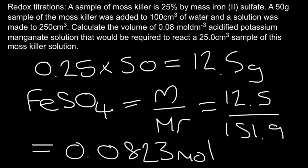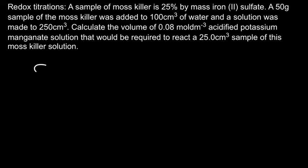So that's all the moles of FeSO₄ that are inside the moss killer sample that I'm using and are now in my 250 cm³ solution. But I'm not actually using all of those moles in the titration. I'm only actually using a 25 cm³ sample of that. And since 25 cm³ is a tenth of 250 cm³, then I'm only going to be using a tenth of these moles in the titration. Now you could keep it really simple, and you could just do 0.0823, and you could divide that by 10. And that would tell you how many moles you have in the 25 cm³ solution.